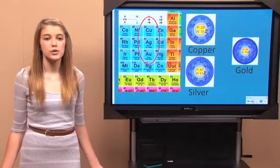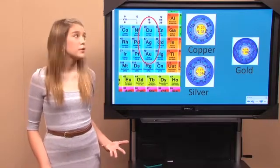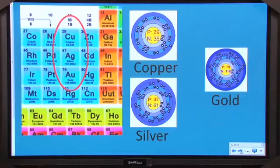Well, since copper, silver, and gold are all in the same group, they must have the same number of valence electrons. Yeah, check it out. They all have one electron all by itself on the outermost energy level.